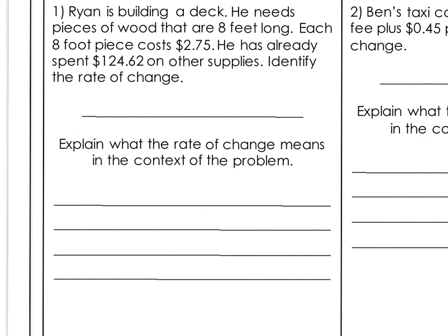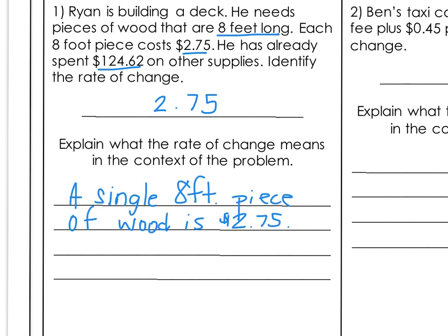Ryan is building a deck. He needs pieces of wood that are eight feet long, and each eight-foot piece costs $2.75. He has already spent $124.62 on other supplies. Identify the rate of change. There's a lot of information here, but the rate of change or slope is $2.75 per eight-foot piece. That represents the cost of a single eight-foot piece of wood. Written as a rate: $2.75 per eight-foot piece.